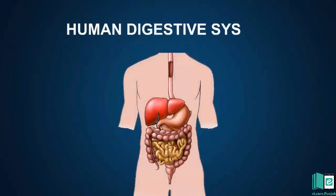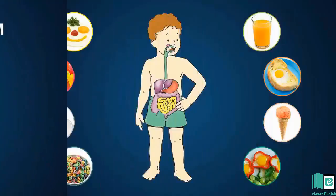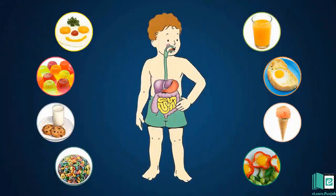Digestive System. Eating well is one of the most important things to keep our body healthy. Different foods are the sources of nutrients. Nutrients are the useful parts of our food.